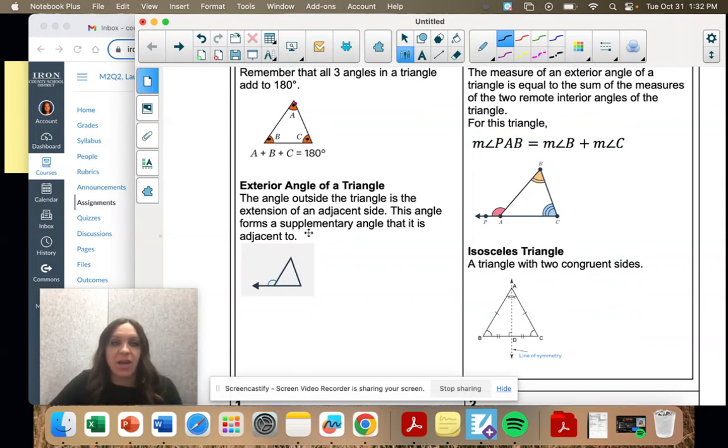That's when we have a triangle and one of the sides extends, and it could extend from any side, but that angle that it makes on the outside is called the exterior angle. Remember it makes supplementary angles, and that means that those two, the inside and the exterior, add to 180.